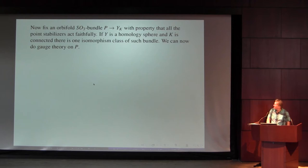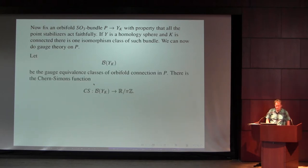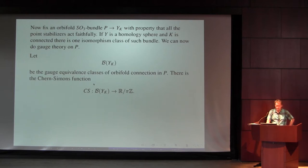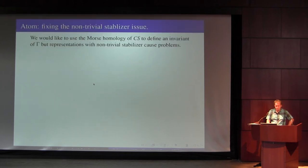So we're going to do gauge theory on this SO(3) orbifold bundle. We need a little bit of notation for that — the space of connections, gauge equivalence classes of connections on our orbifold bundle. I'm going to keep the principal bundles suppressed through most of the talk. There's a Chern-Simons function; critical points again are the representations.